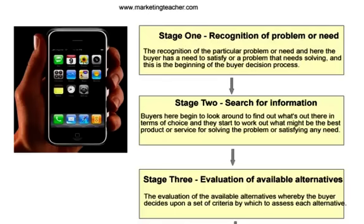The second stage is where you speak to your friends and surf the internet looking at alternatives, which represents stage two, or your information search. As a buyer you might visit a local cell phone store or speak to sales staff to help you complete stage three, i.e. your evaluation of alternatives.